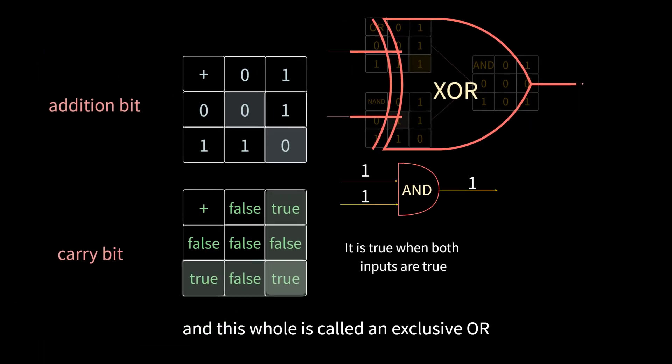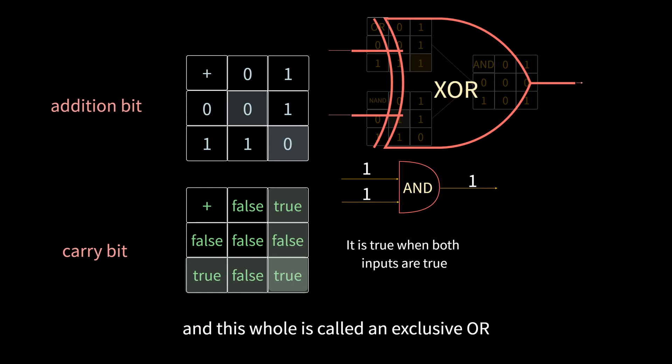Then, you can use the AND gate, connect them together, and this whole is called exclusive OR gate.